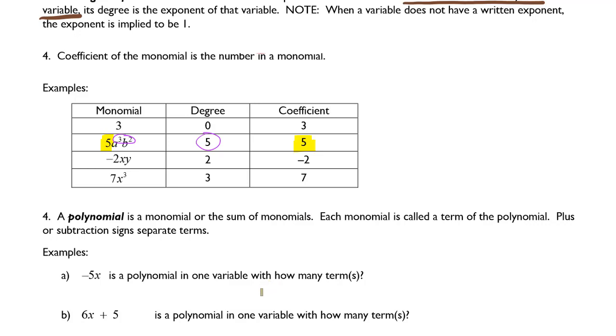If we had the monomial negative 2xy, the degree would be 2. That's because we're looking at the degree on x, which is assumed to be 1, and the degree on y, which is assumed to be 1. If we add those together, we get 2. And the leading coefficient, or the coefficient of this monomial, this one term expression, it's negative 2. It's the number out front.